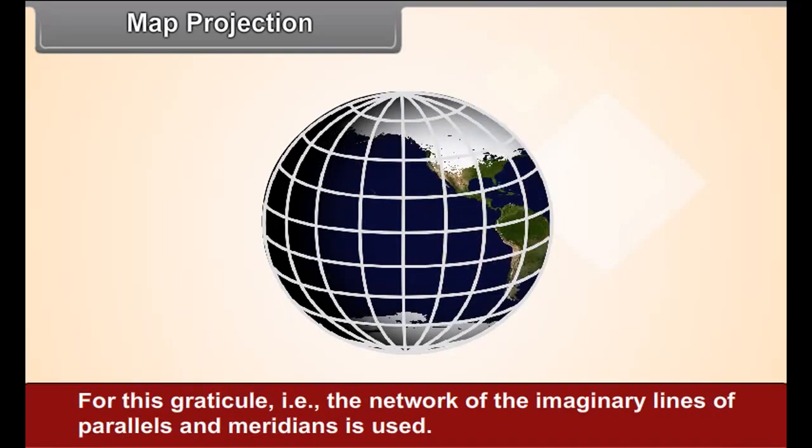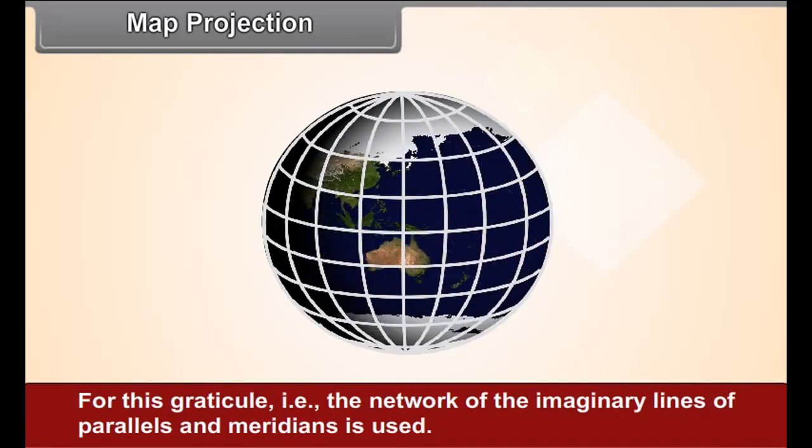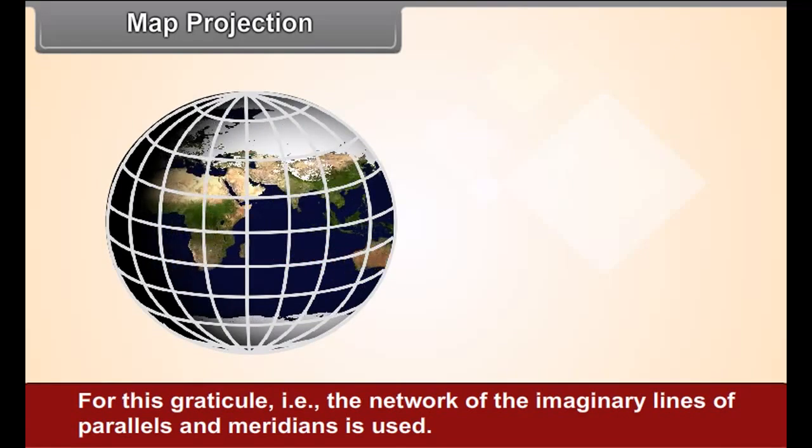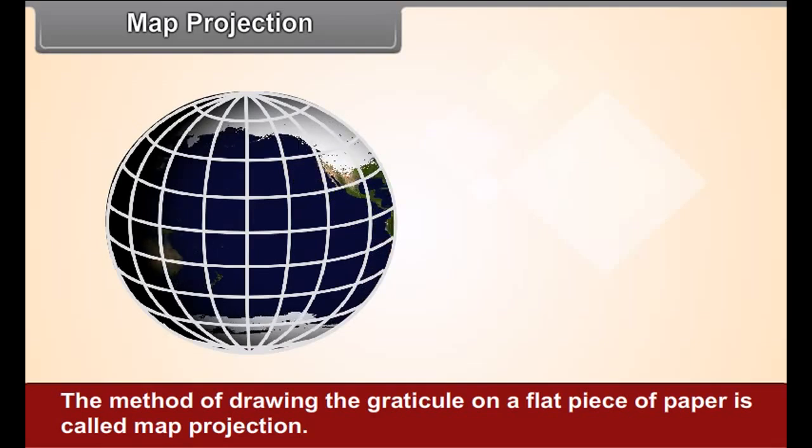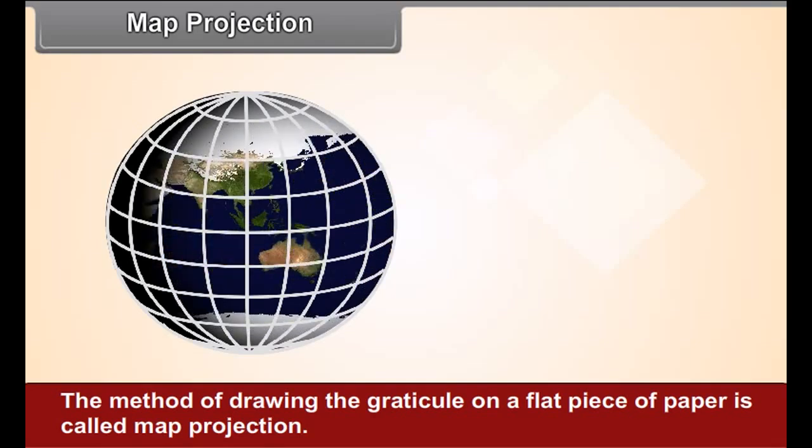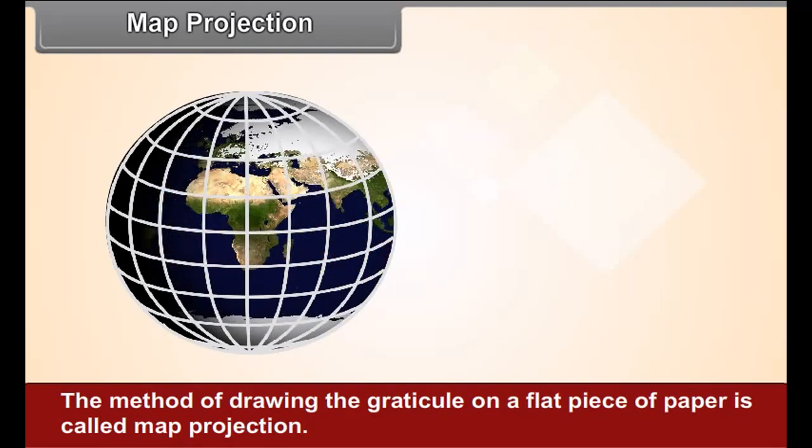For this, the graticule, i.e., the network of the imaginary lines of parallels and meridians is used. The method of drawing the graticule on a flat piece of paper is called map projection.